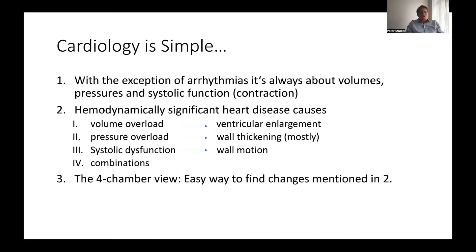Volume overload can be seen by ventricular enlargement. Pressure overload — at least chronic pressure overload — can be seen because it causes thickening of ventricular walls. Systolic dysfunction can be seen because of reduced wall motion, which can be estimated subjectively or by use of so-called M-mode or other measurements.